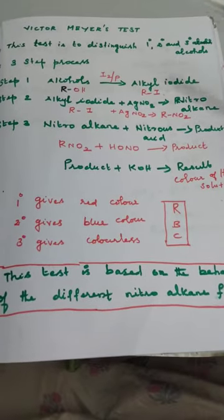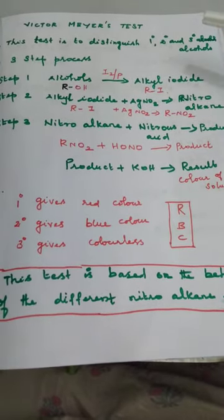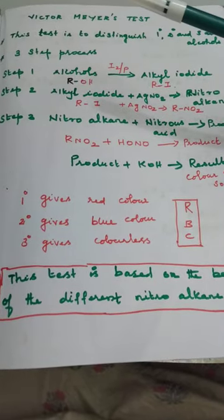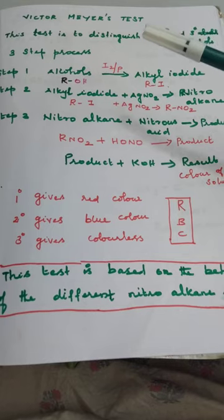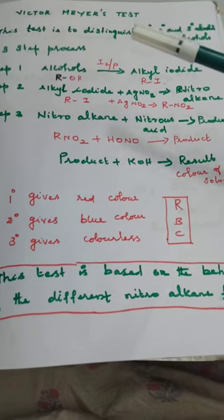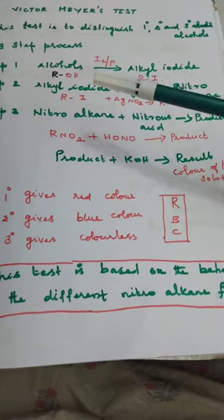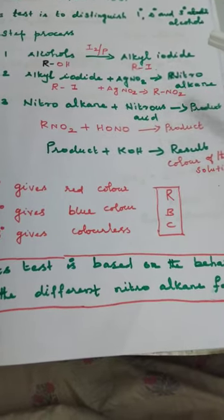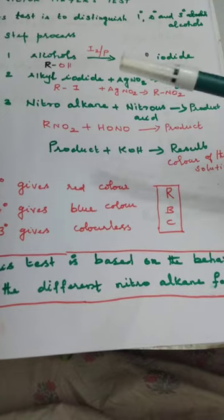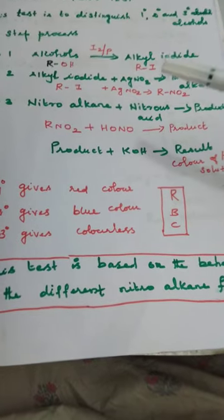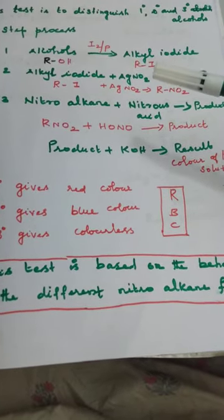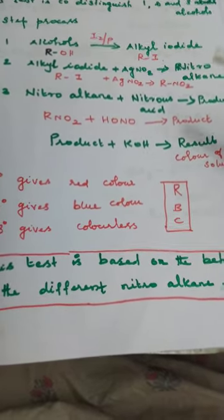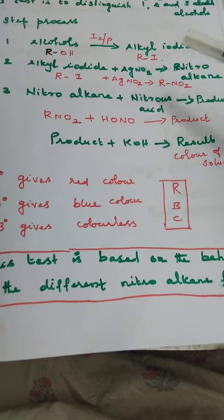Victor Meyer's Test is used to distinguish primary, secondary, and tertiary alcohols. It is a three-step process. In Step 1, the alcohol is treated with I2 and phosphorus. In this reaction, the OH group present in the alcohol is replaced by iodine, so the alcohol becomes an alkyl iodide. In Step 2, the alkyl halide is treated with silver nitrite, AgNO2. The iodine reacts with silver to give AgI, which is removed as a byproduct.